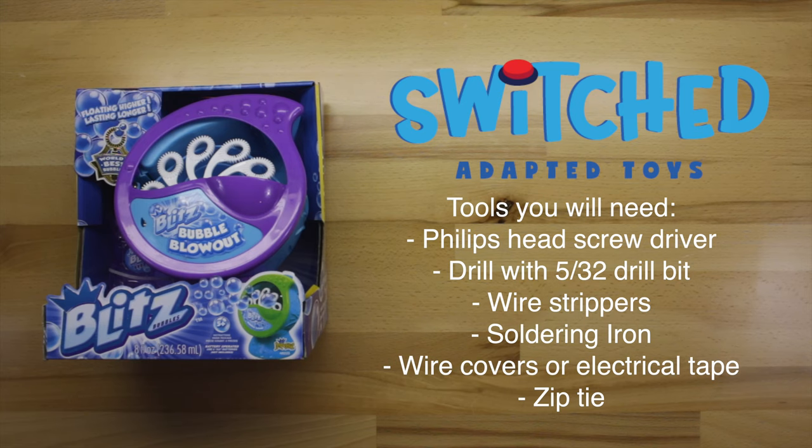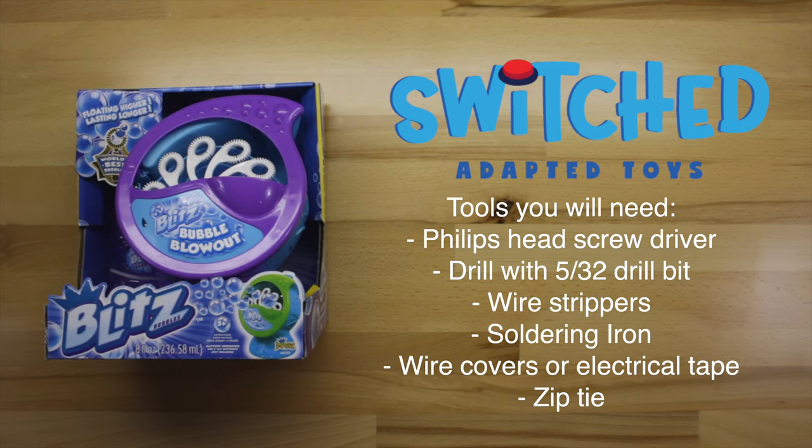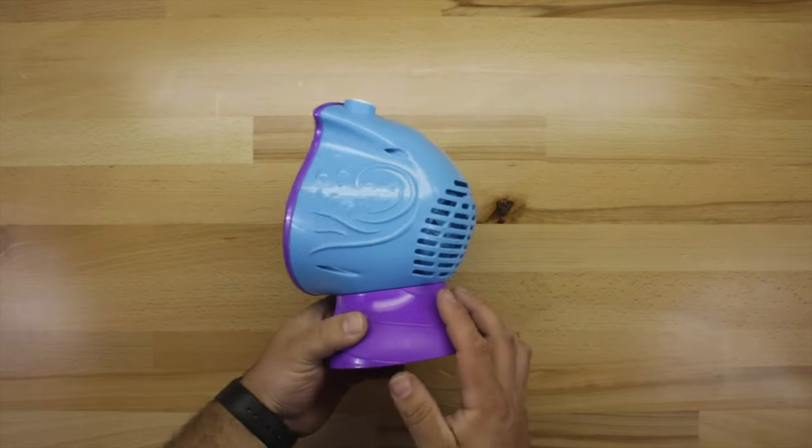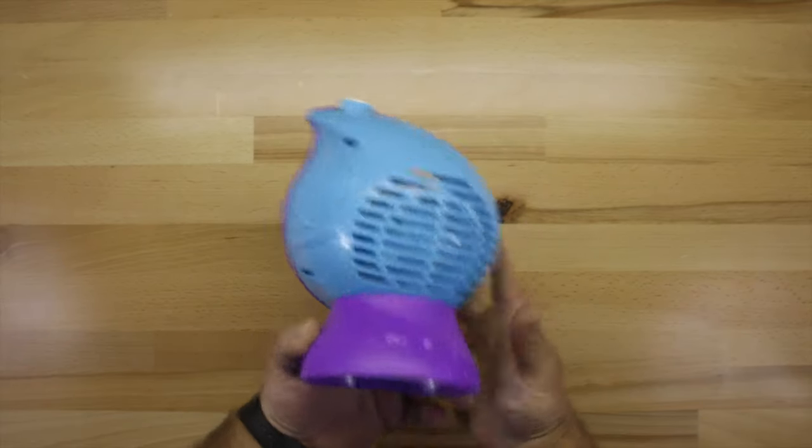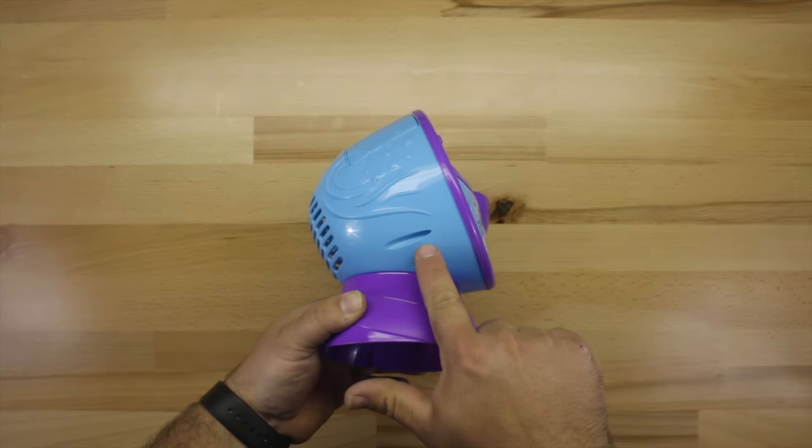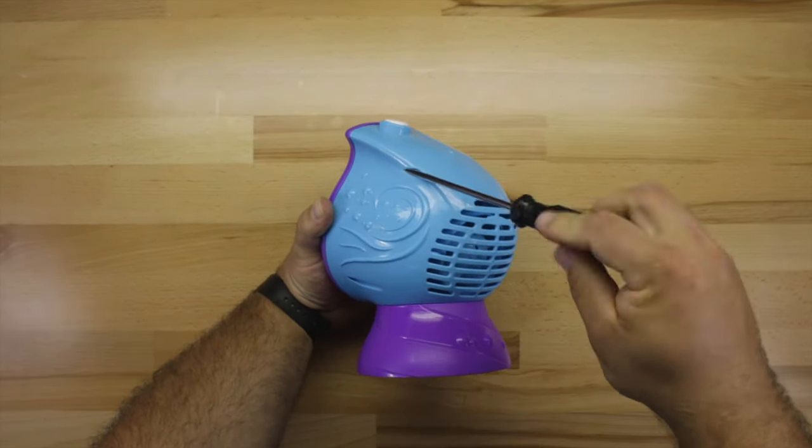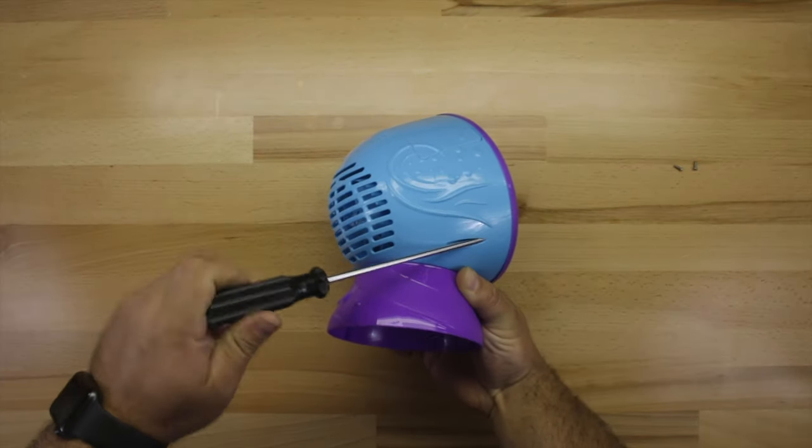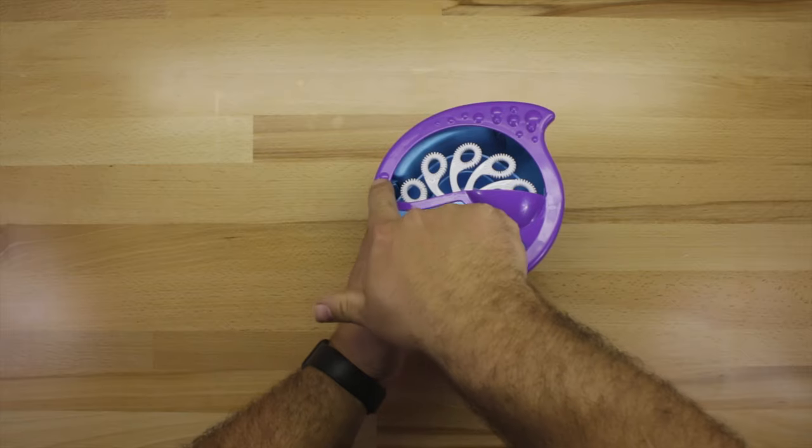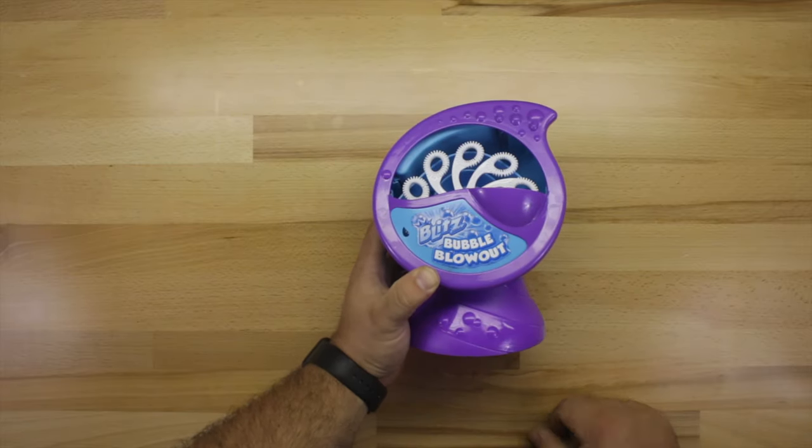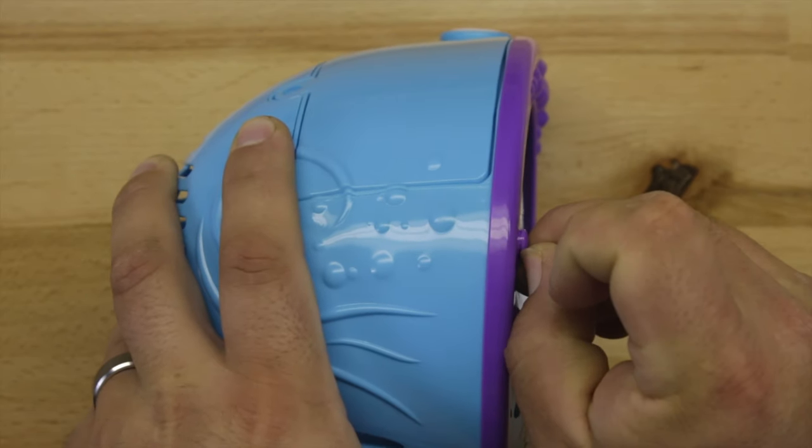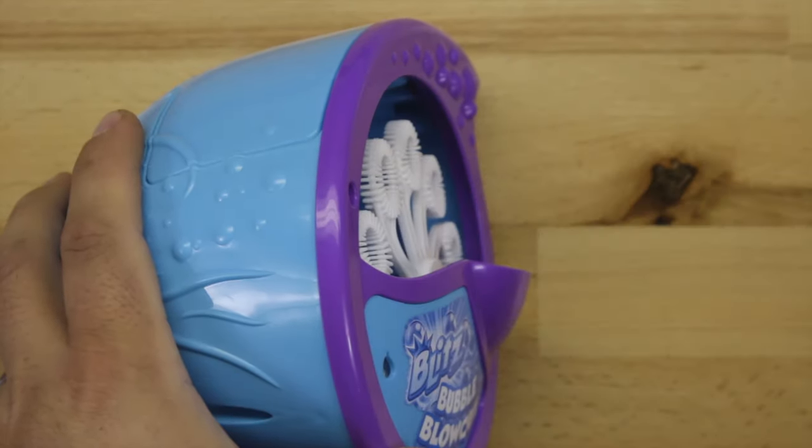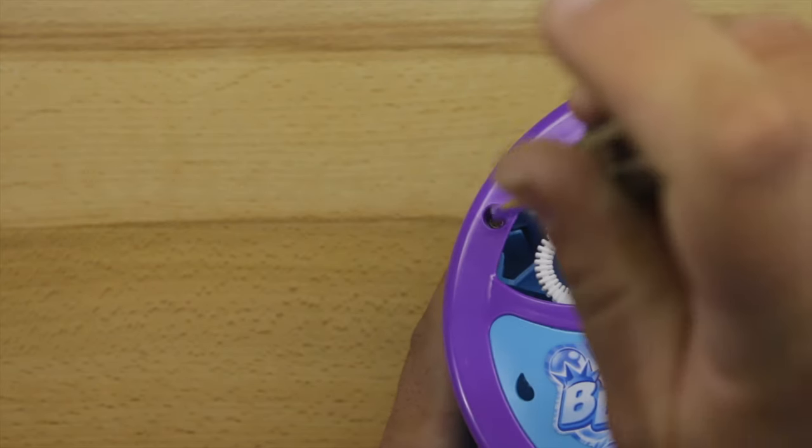It's really not that hard. All you really need to be able to do is solder a few wires together. We're going to start by removing the three screws on the back of the bubble machine. Once those screws are removed, there is one final screw hidden behind this little bubble. All you need to do is pry out the plug and it will expose the screw and remove it.